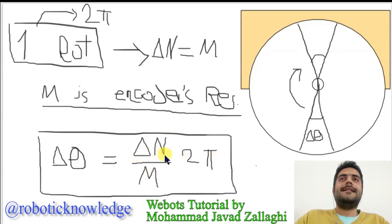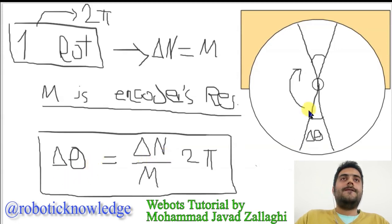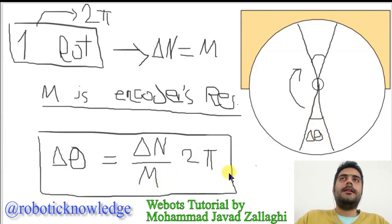Delta N is the change of the feedback of the encoder during rotation of the wheel by the amount delta theta. M is the encoder's resolution and the 2π comes from the previous formula.